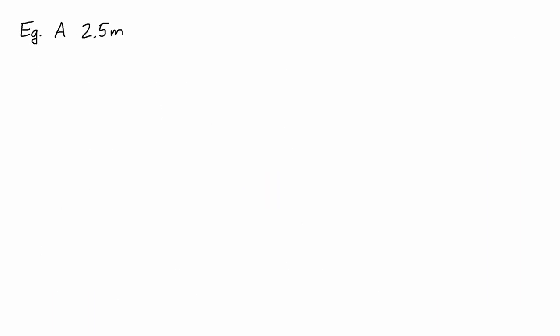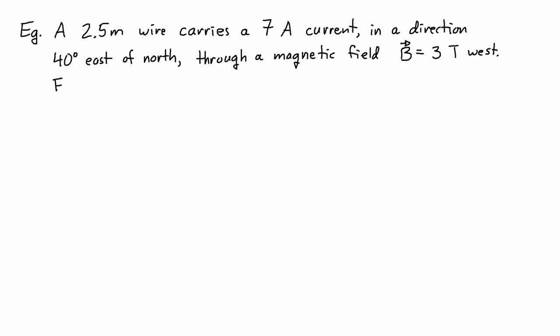All right, let's look at an example. A 2.5 meter wire carries a 7 amp current in a direction 40 degrees east of north through a magnetic field that is 3 teslas west. Find the magnetic force acting on the wire.